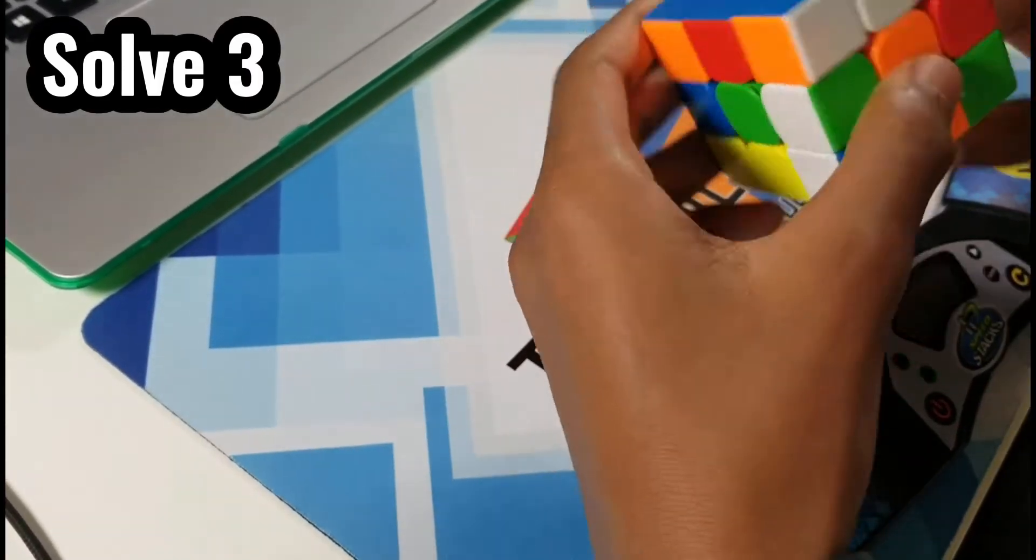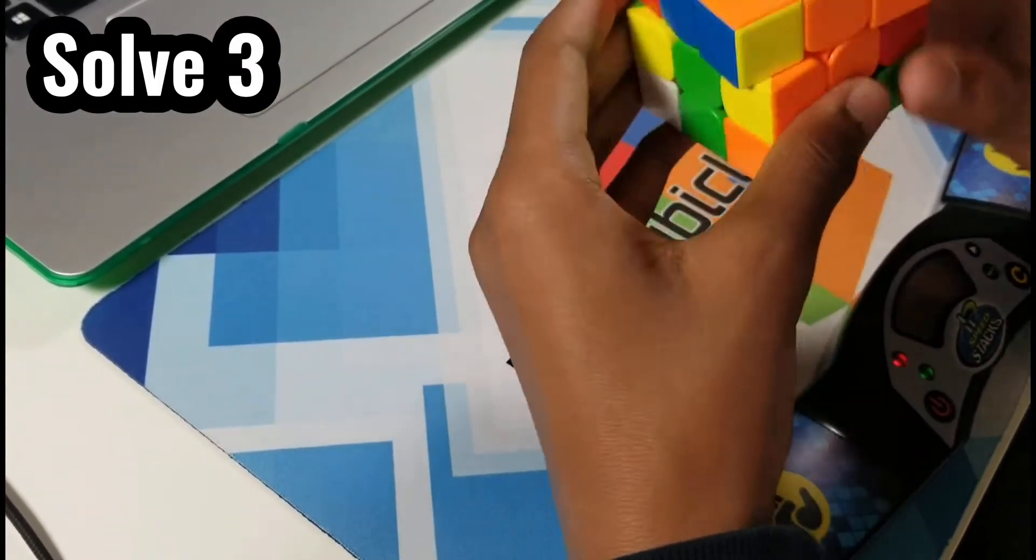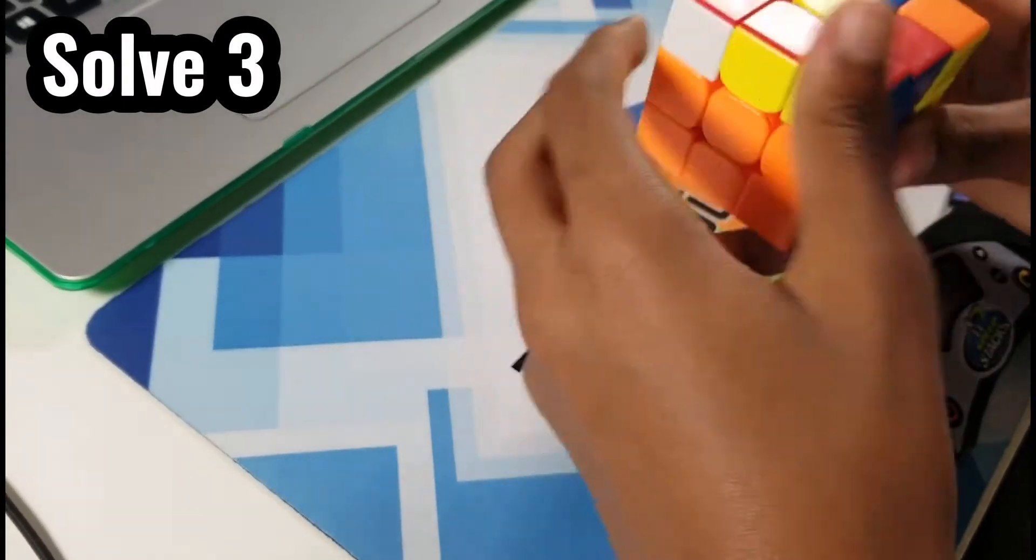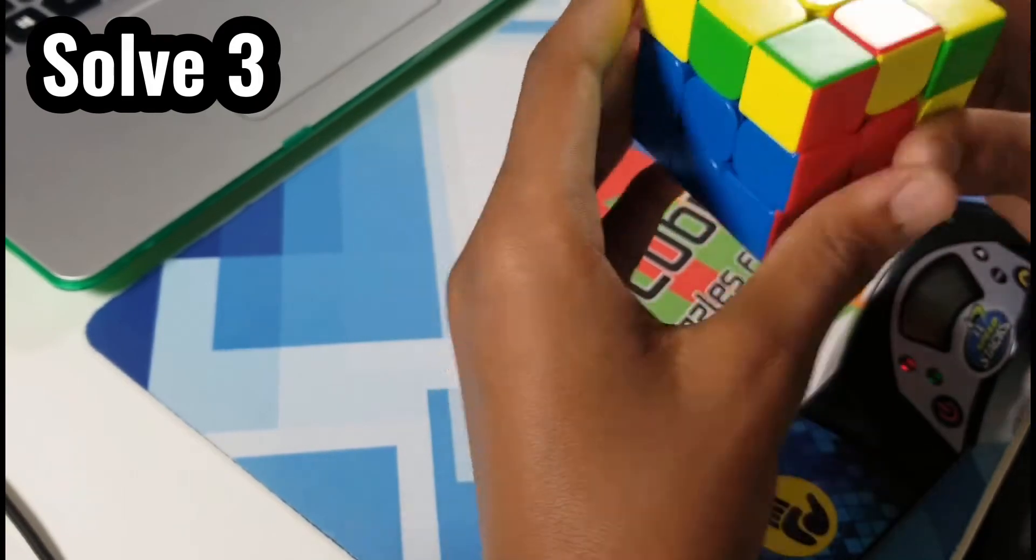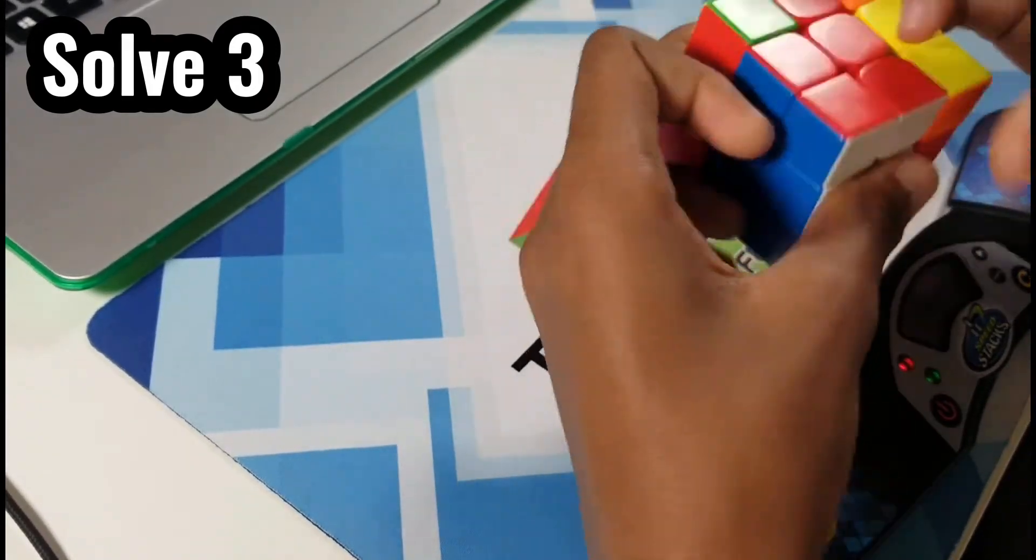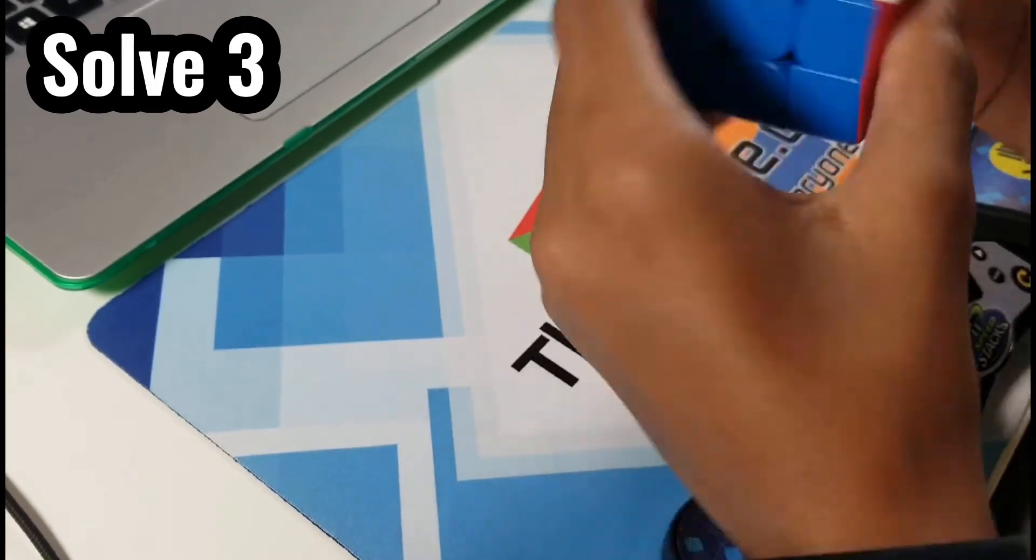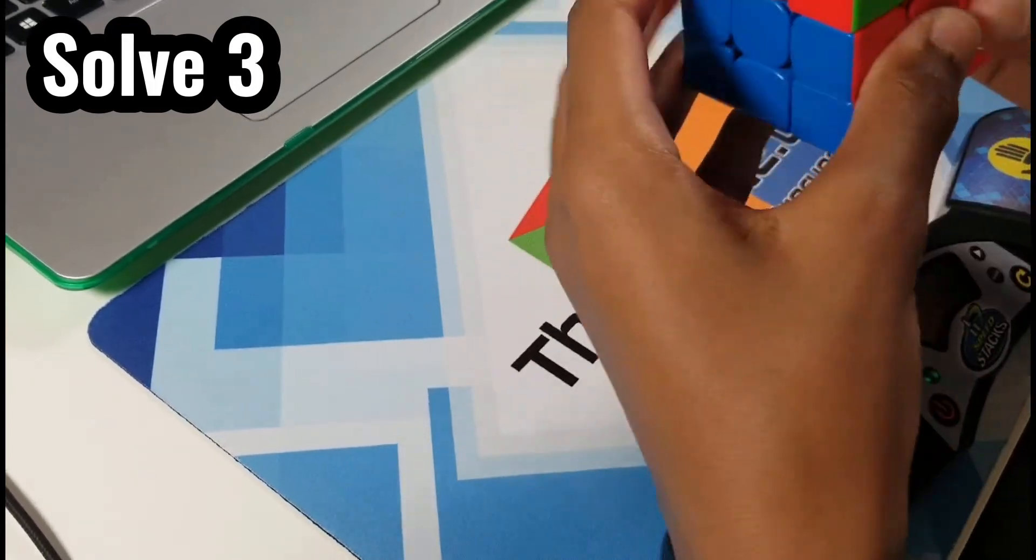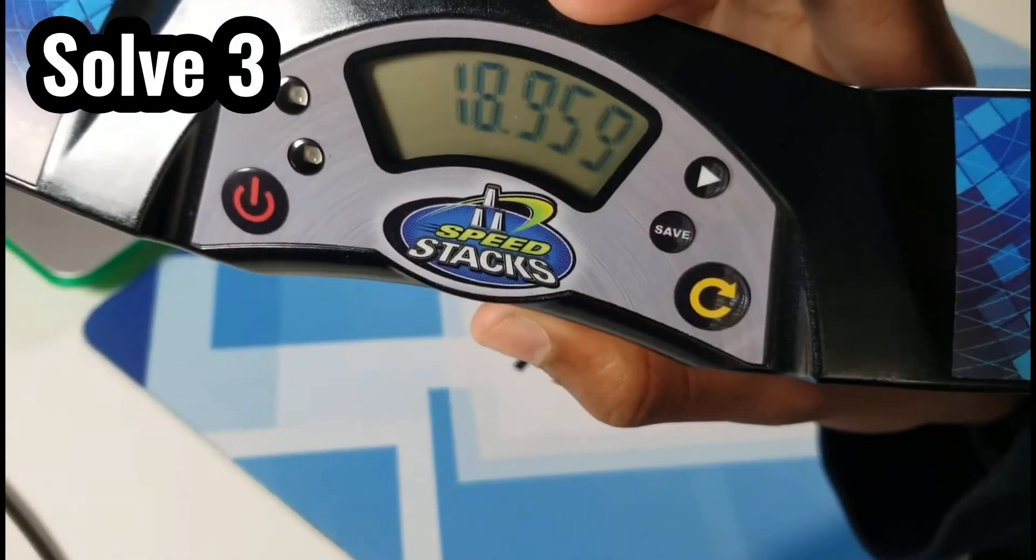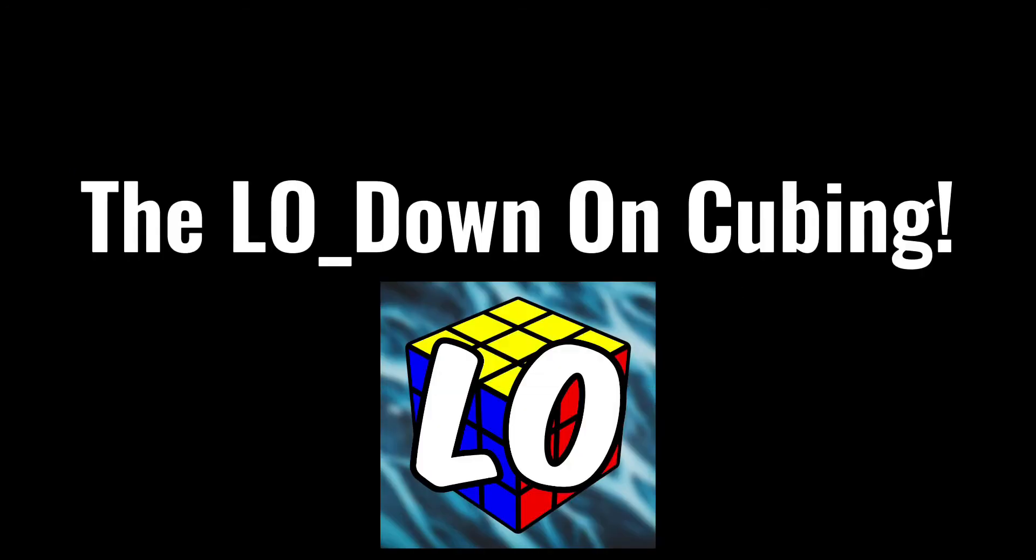Okay, so the low down on cubing starts his third solve. Some pretty fast turning here, but the cross doesn't seem to be the most efficient. Working on F2L a lot faster than I did though. As you can see, his finger tricks are very good, just like mine. But unfortunately, it looks like he has a twisted corner and he is doing a two-look PLL here, unfortunately. I guess he doesn't know all the PLLs. But he gets a total of 18.959. The winner of the third round is the low down on cubing.